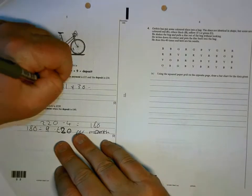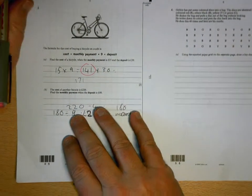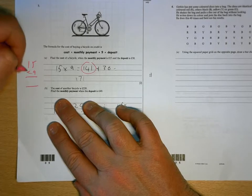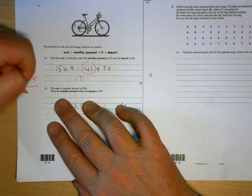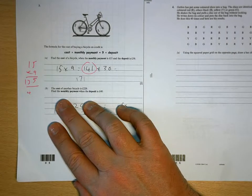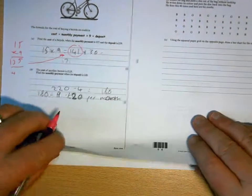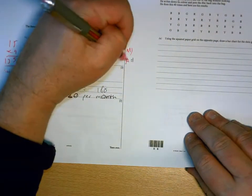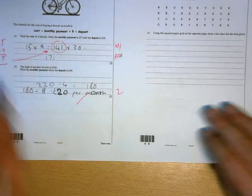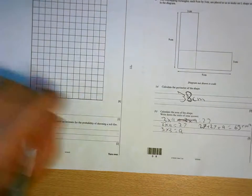15 times 9 is not 141. 5 times 9 is 45, 1 times 9 is 9, add 4, 135. 25, 20 per month is correct, 3 marks.